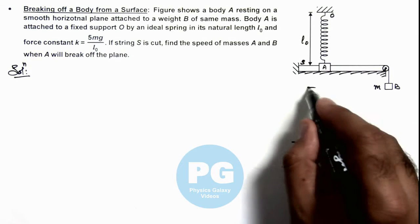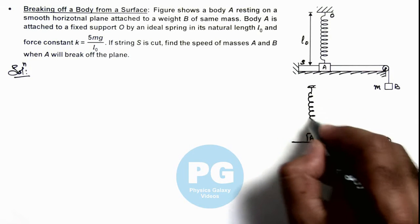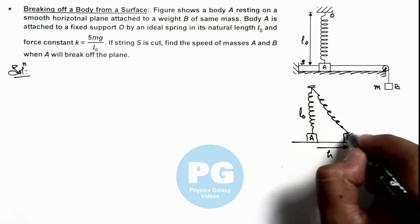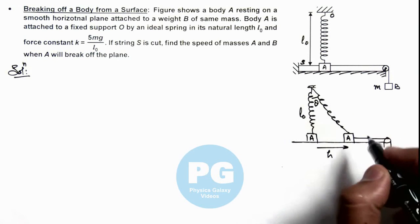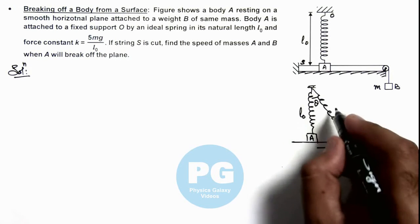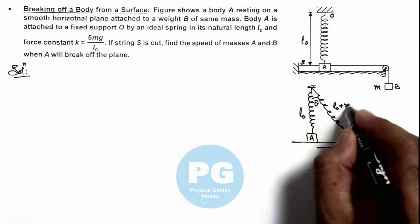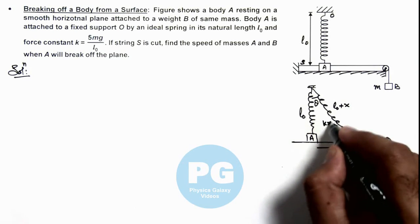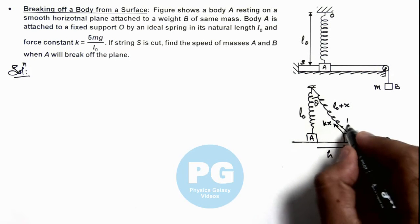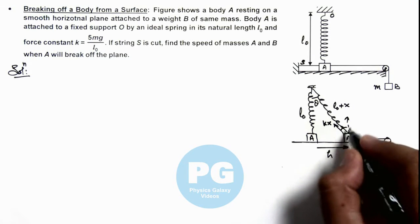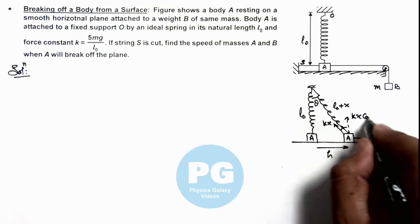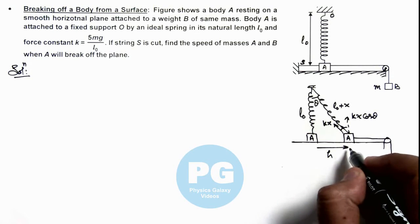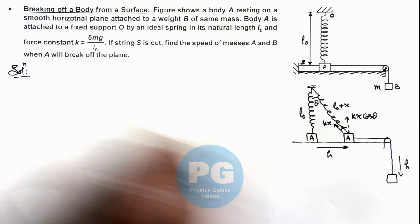In this situation, the spring which was earlier at its natural length l₀ will be elongated and inclined at an angle θ. If its elongation is x, the length will be l₀ + x, and the spring will exert a restoring force kx on it. The upward component of this force is kx cos θ. When this kx cos θ equals the weight of block A, it will break off the plane.